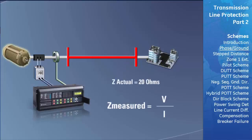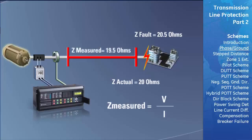For example, assume the actual impedance of our transmission line is 20 ohms and a fault occurs just past this line on the next adjacent circuit. The actual impedance from the relay's measurement point to this fault is 20.5 ohms. Due to inaccuracies in the CTs and VTs along with some transient effects, the relay may measure the impedance to the fault as less than it actually is, and see the fault as being on the line it is protecting, causing it to trip unnecessarily.